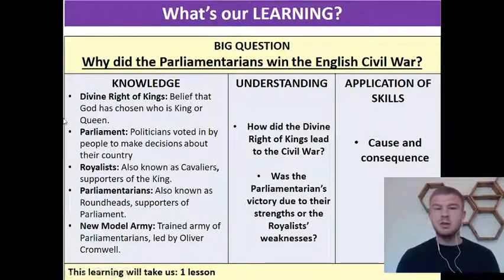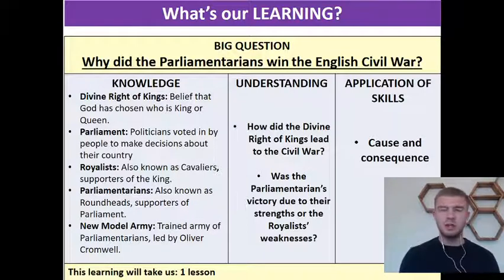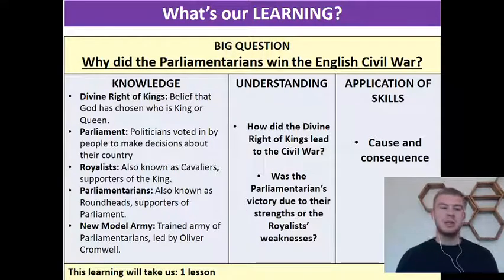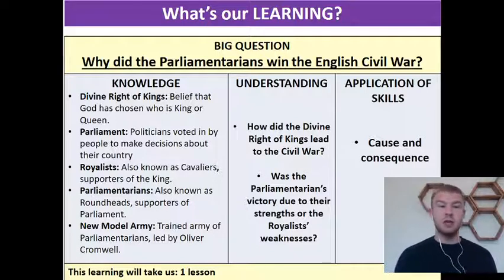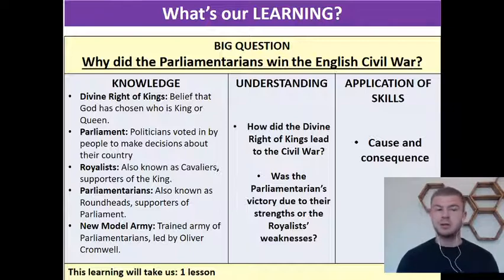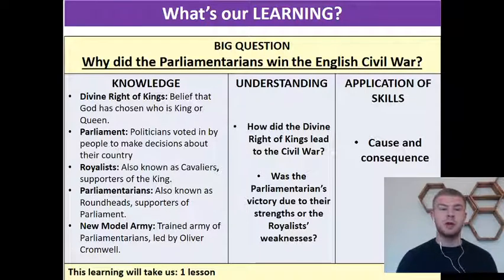Parliament — an idea we've looked at in previous lessons — that is politicians voted in by people to make decisions about their country. We saw with Elizabeth that sometimes parliament and kings or queens don't agree about how best to run the country. Then the two different sides of the war: the royalists, also known as the cavaliers, who are supporters of the king, and the parliamentarians, also known as roundheads, who are supporters of parliament.